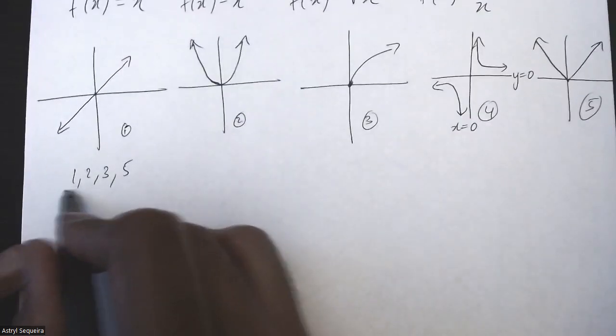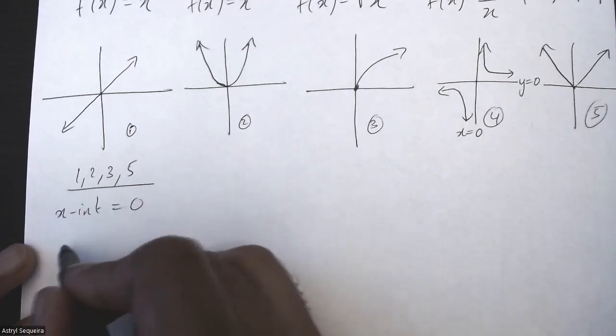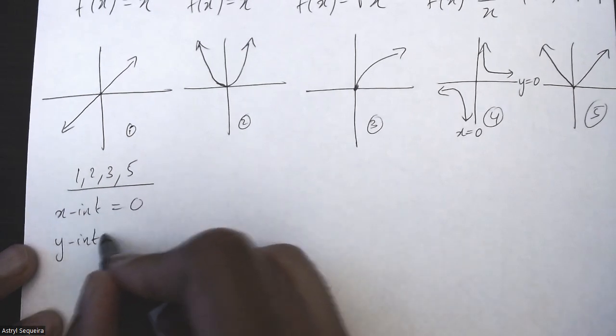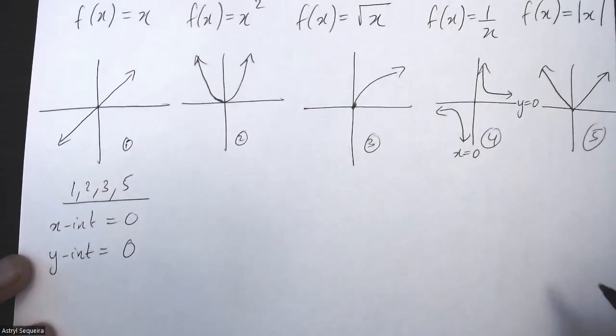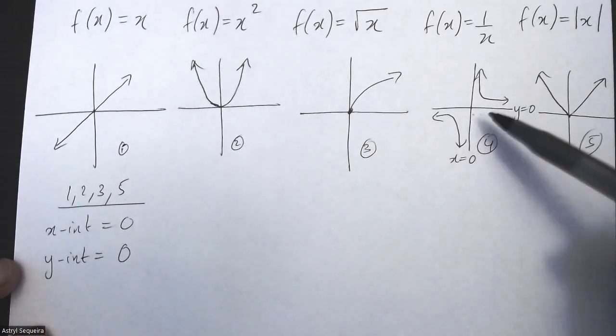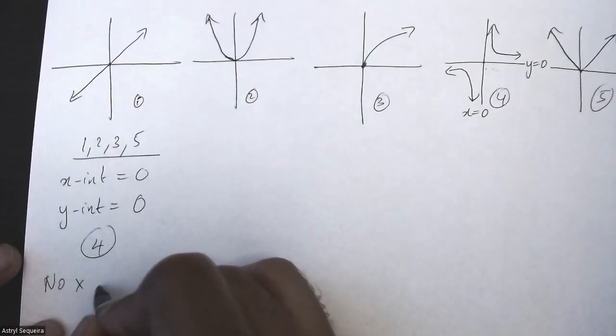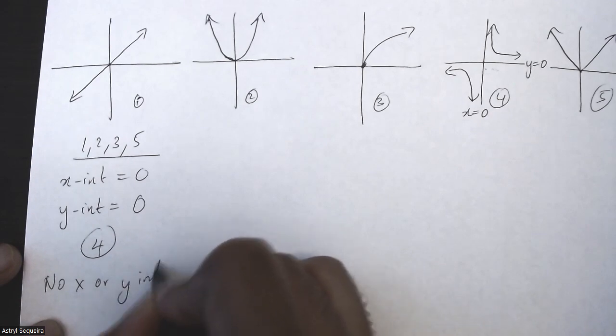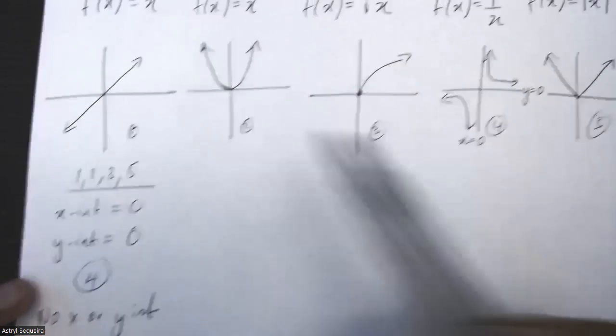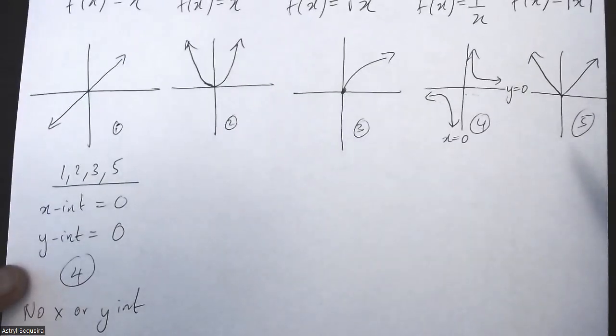So one similarity between 1, 2, 3, and 5 is they have x-intercept is zero and the y-intercept is also zero. And then the difference for this one is that you can say it has no x or y-intercept. So I'll write the difference down here: no x or y-intercept. So when you're comparing, that's one similarity and difference you can use.